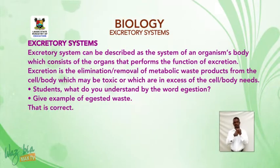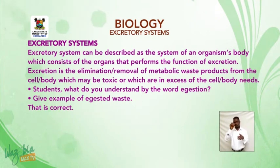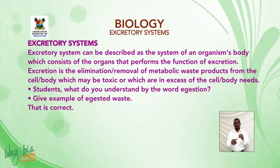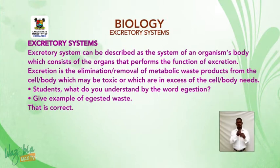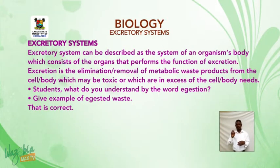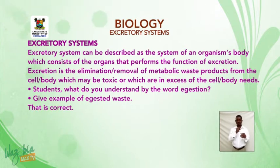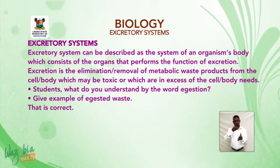The excretory system can be described as the system of an organism's body which consists of the organs that perform the function of excretion. Excretion is the elimination or removal of metabolic waste products from the cell or body which may be toxic or which are in excess of the cell or body needs.